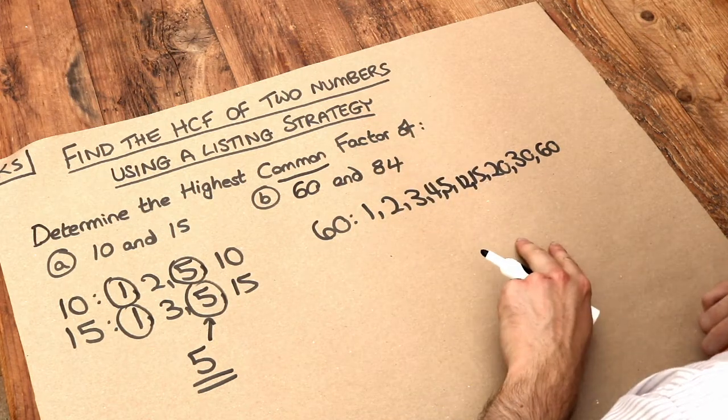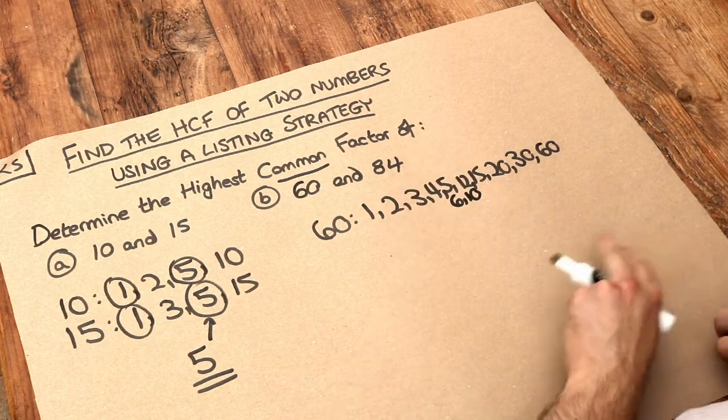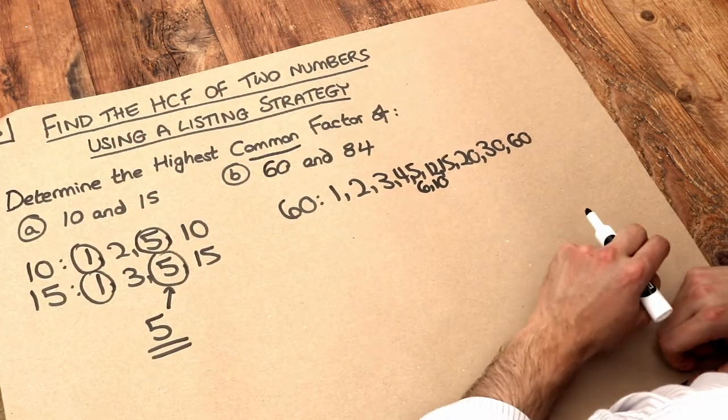And then I've run out of space. And then you've finally got 6 and 10 give you 60 as well. So they're all the factors of 60. There's quite a lot. And then what about 84?